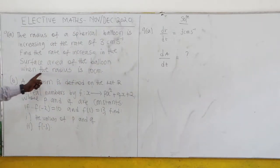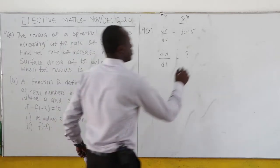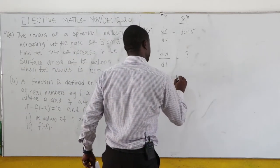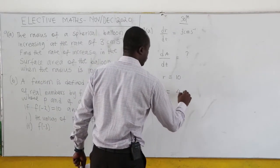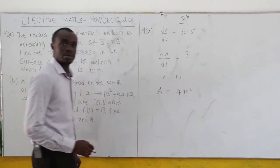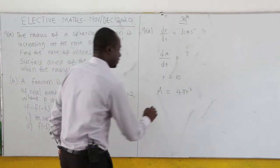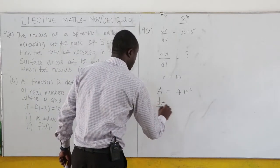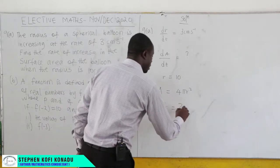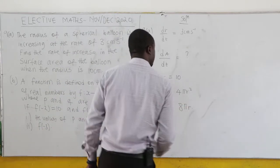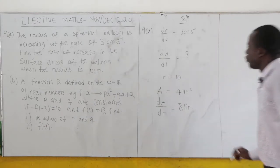The surface area of a sphere is A = 4πr². To find dA/dr, we differentiate this to get 8πr.